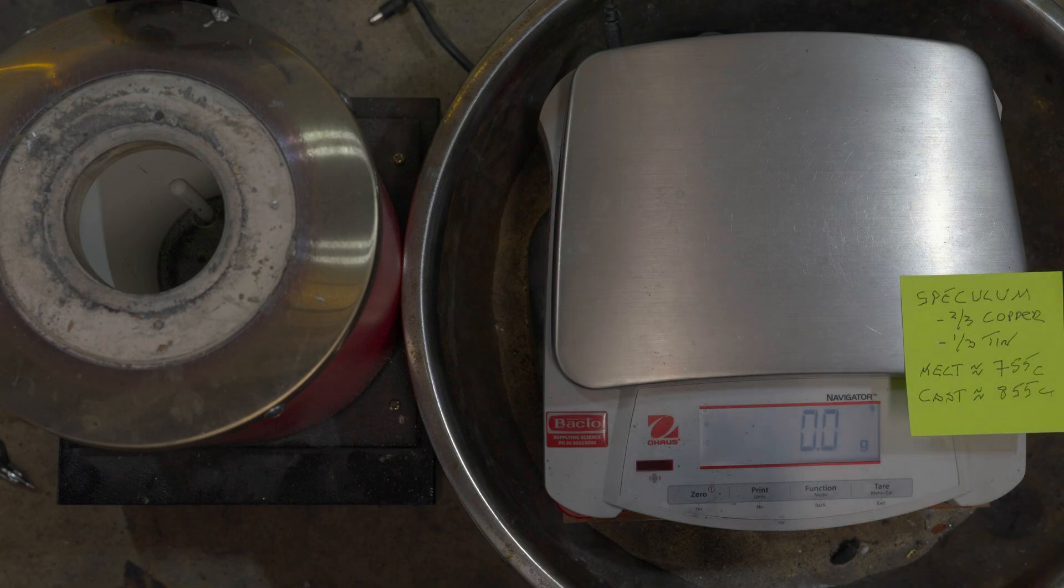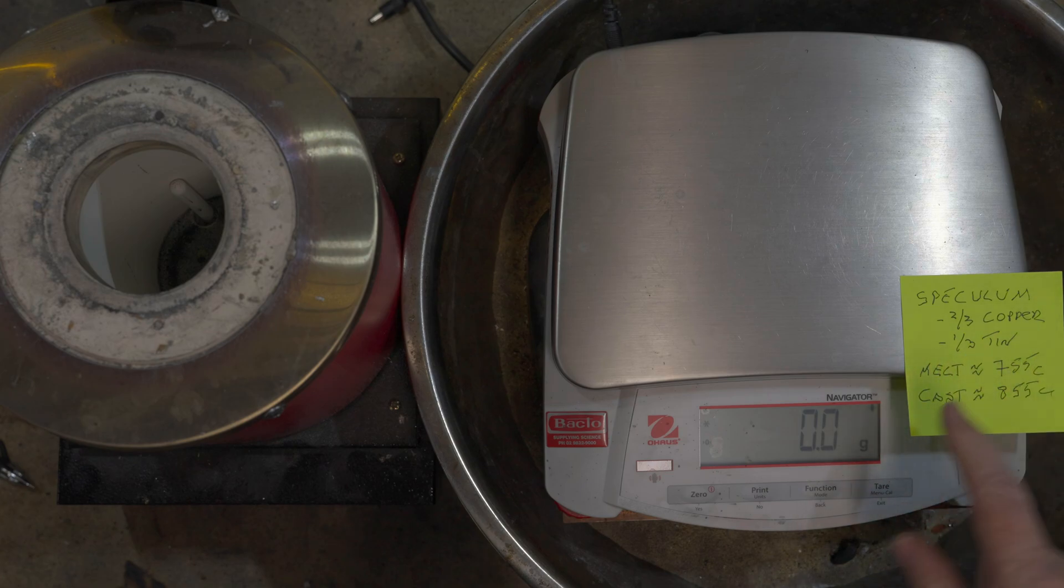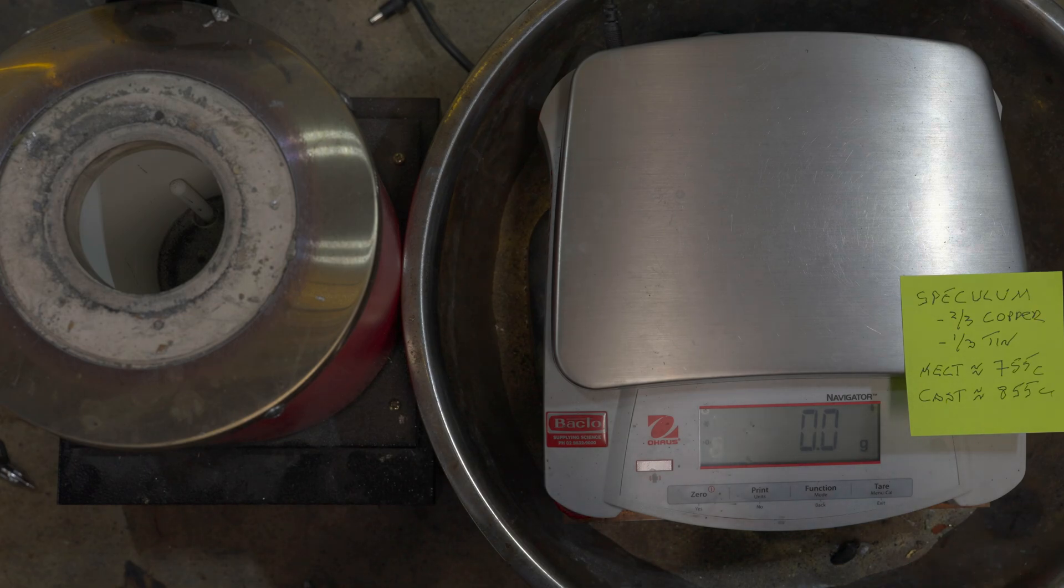Today we're going to cast a replica of an ancient Greek mirror using an alloy called speculum. It's two-thirds copper, one-third tin, and that alloy is very hard and brittle, but apparently it will polish up into a nice neutral color. If you just use bronze or something, you'll get a bronzish tint to it.